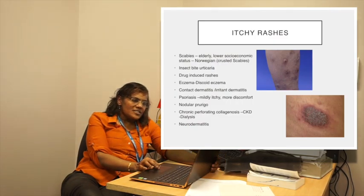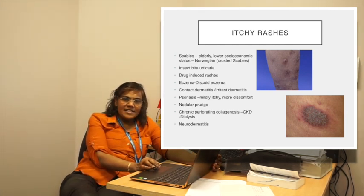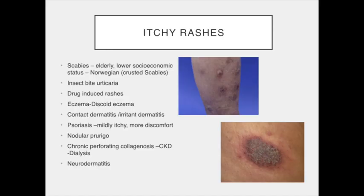Then come itchy rashes. Most common itchy rashes, as we all know, are scabies — good not to miss it, and always worth trying an anti-scabetic medication if signs indicate, or in atypical types such as Norwegian scabies in immunosuppressed people. Second come insect bites and urticaria, and again there are drug-induced rashes which can be itchy. A particular type is discoid eczema, which is very itchy, has an infective trigger, and is managed with antibiotics and emollients. Not to mention contact dermatitis and irritant dermatitis, which can be itchy. Another common itchy dermatitis associated with a medical condition is chronic kidney disease, especially patients on dialysis. This is called chronic perforating collagenosis, presenting as nodules in the skin, and is more common in patients who had gadolinium contrast for MRI.